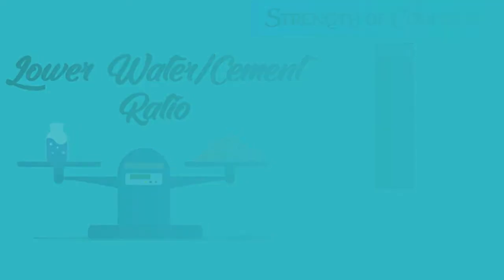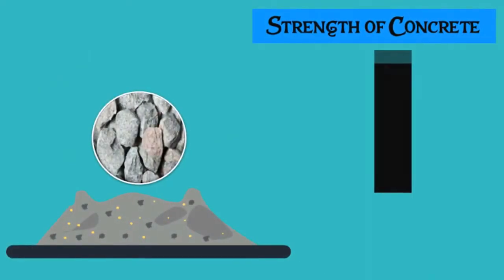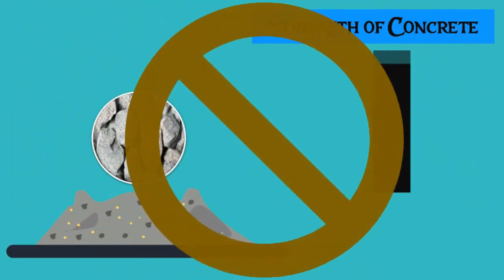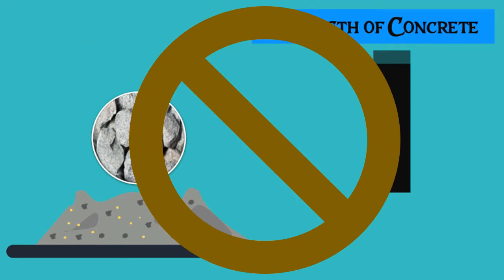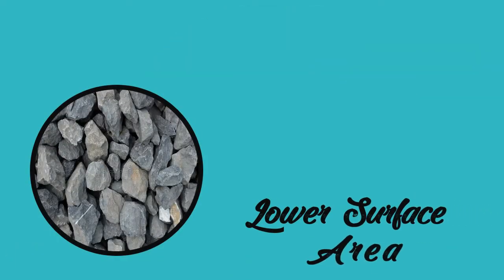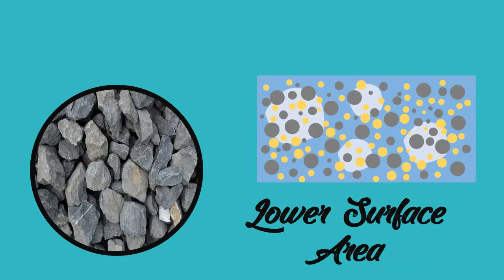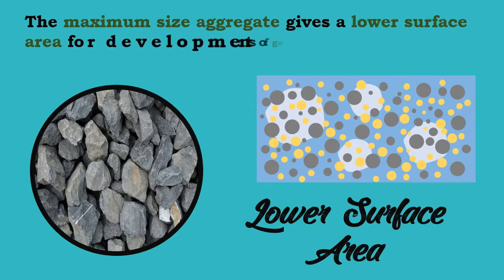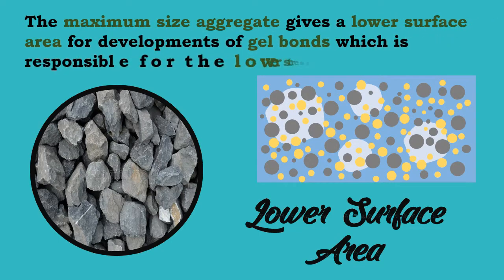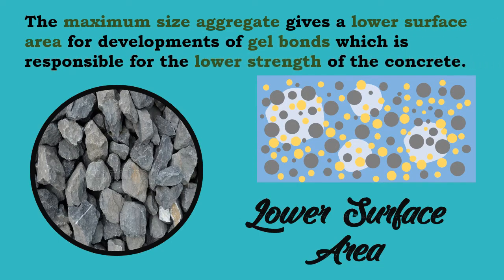Over the period, the researchers found that the large size aggregate does not contribute to the higher strength of concrete in reality. This is due to the fact that the maximum size aggregate gives a lower surface area for development of gel bonds, which is responsible for the lower strength of the concrete.